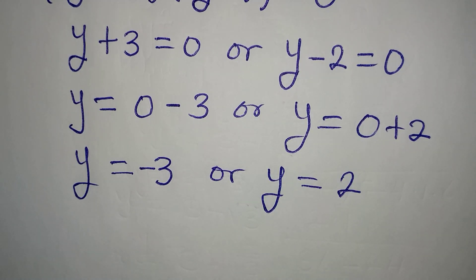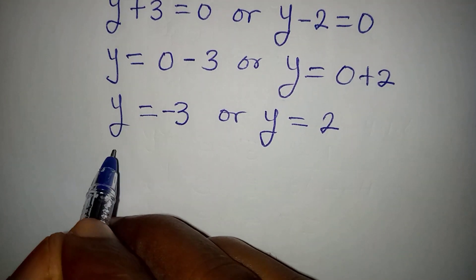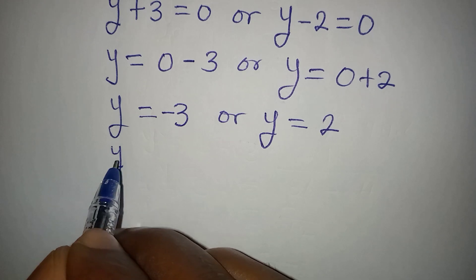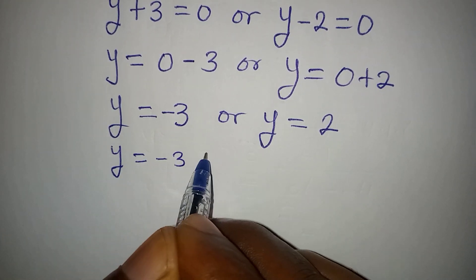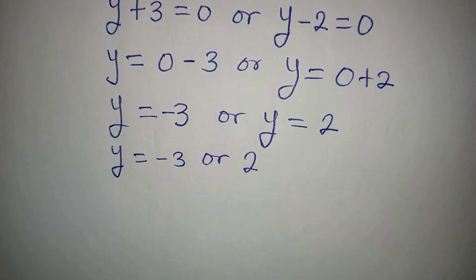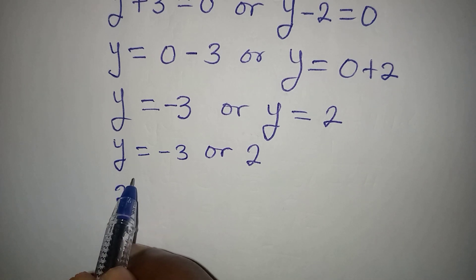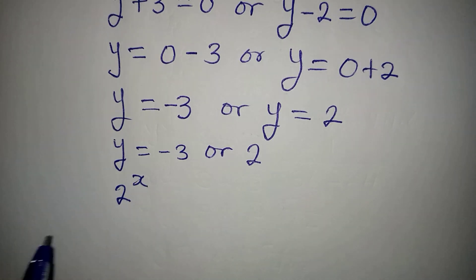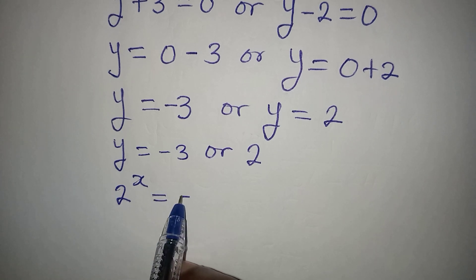So from here, so y from here is equal to minus 3, or 2. But then, you will see it that y itself is equal to 2 to the power of x. So that means 2 to the power of x is equal to minus 3.